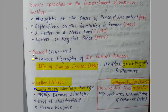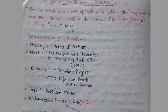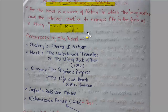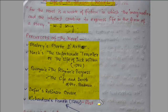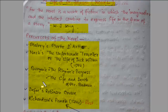Now let's talk about the novel published in the Age of Dr. Johnson. The novel is a work of fiction in which imagination and intellect combine to express life in the form of a story — that is by W.G. Long. Some precursors of the novel are Malory, Nashe ('The Unfortunate Traveler or the Life of Jack Wilton'), Bunyan ('Pilgrim's Progress' and 'The Life and Death of Mr. Badman'), Defoe ('Robinson Crusoe'), and Richardson ('Pamela').